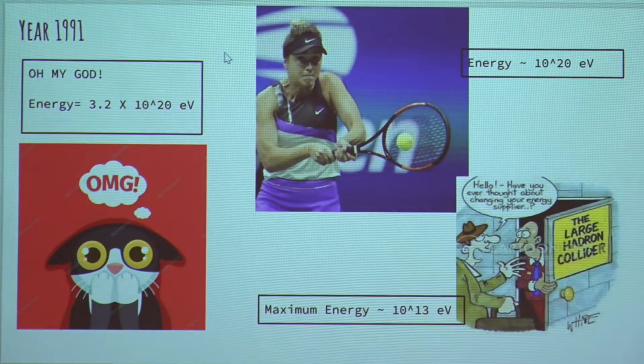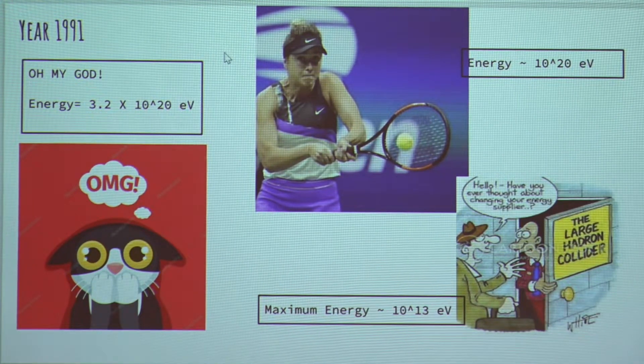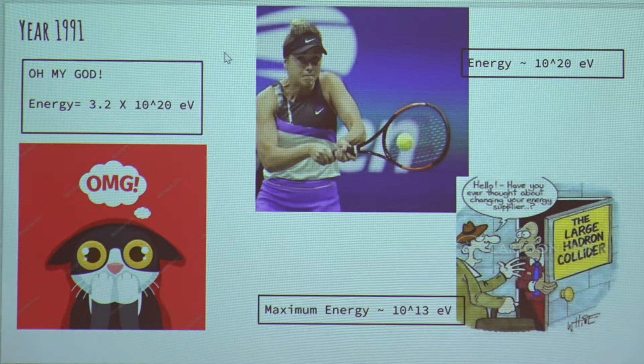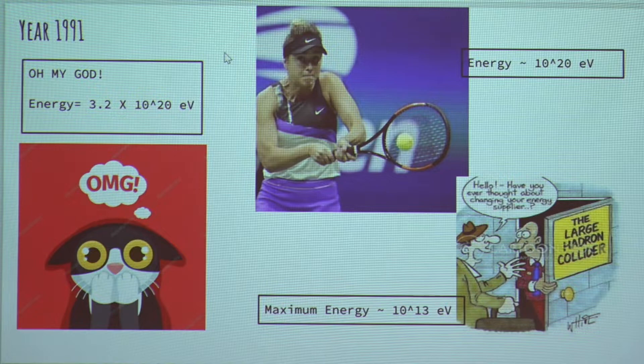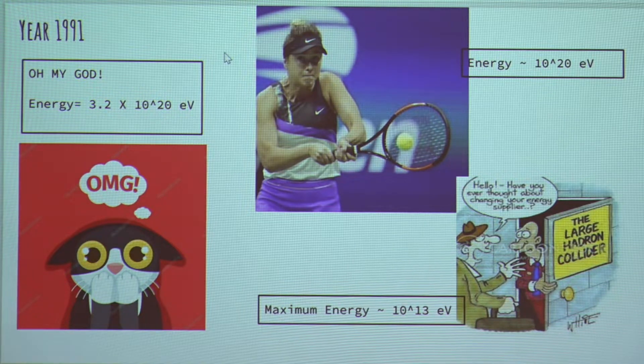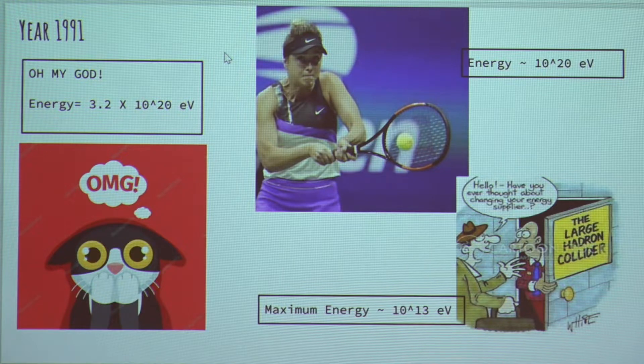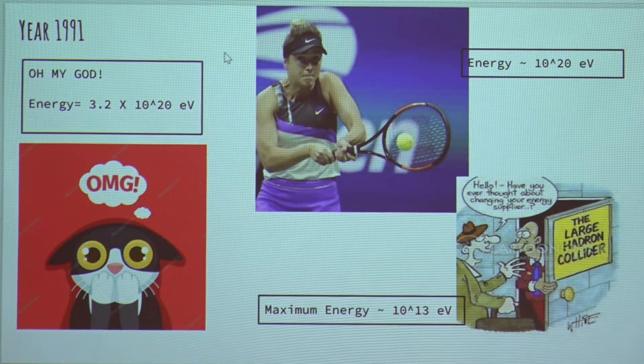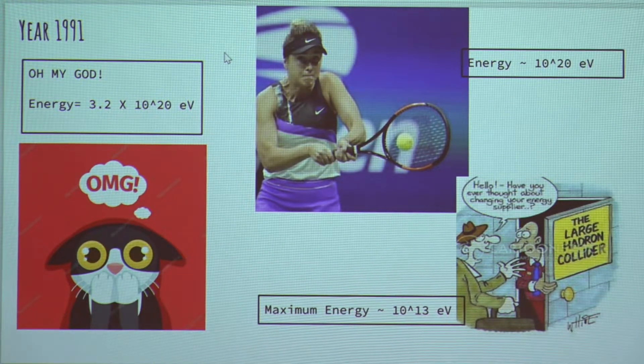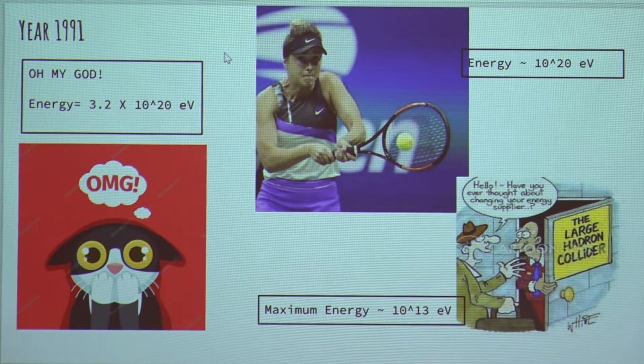So later scientists followed this discovery and built detectors to detect this radiation. In year 1991, we actually detected the first highest energy cosmic ray particle, with an energy of 3.2 times 10 raised to about 20 electron volts. Electron volts is the unit of energy we use for cosmic rays. And this particle was termed as the Oh My God particle.